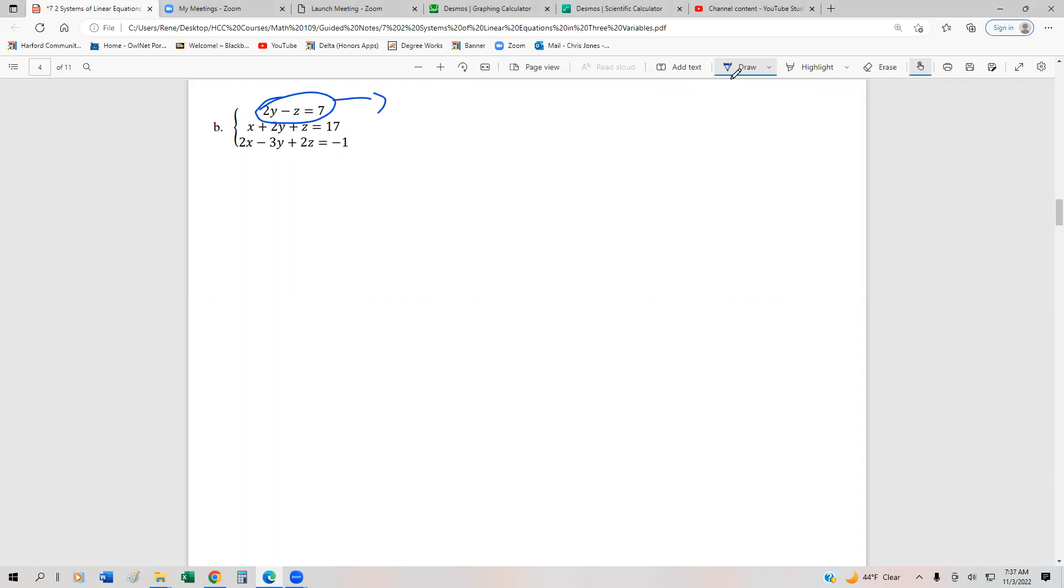So let's solve this for z. I get negative z equals 7 minus 2y. And then if I divide everything by negative 1, I get z is negative 7 plus 2y. And what I can do is substitute this expression back into z into the latter two equations. So equation two is now going to become x plus 2y plus negative 7 plus 2y equals 17. And equation three is going to be 2x minus 3y plus 2 times the quantity of negative 7 plus 2y, and that equals negative 1.